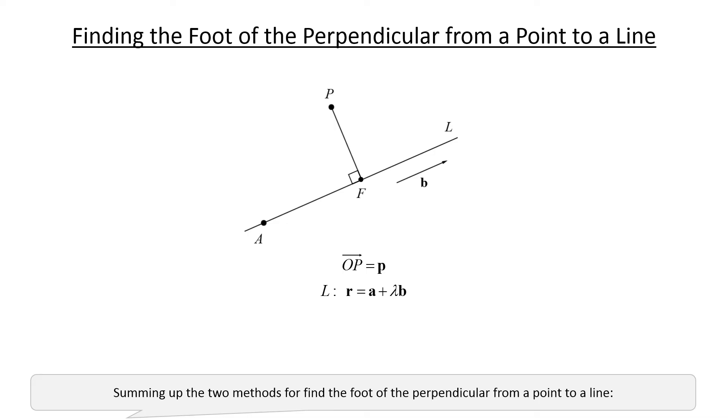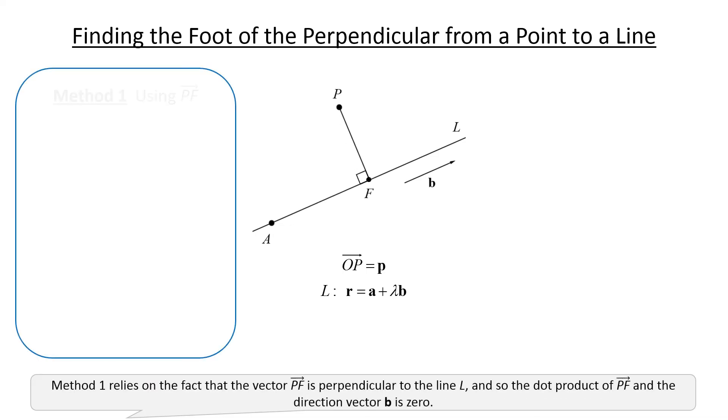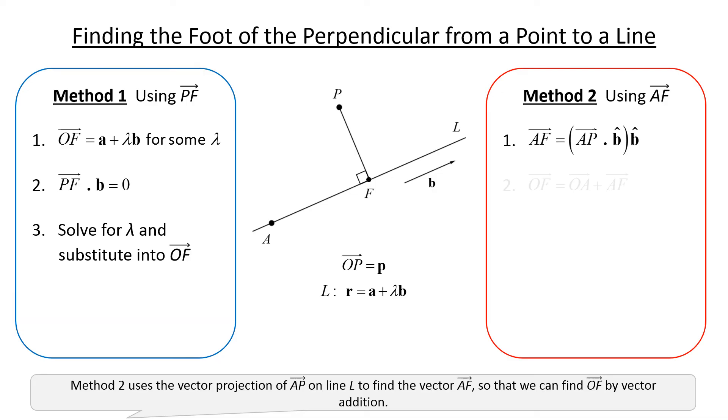Summing up the two methods for finding the foot of the perpendicular from a point to a line: Method 1 relies on the fact that the vector PF is perpendicular to the line L, and so the dot product of PF and the direction vector B is 0. Method 2 uses the vector projection of AP on line L to find the vector AF, so that we can find OF by vector addition.